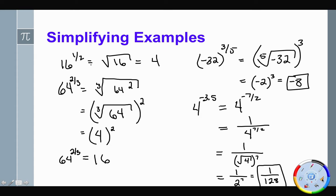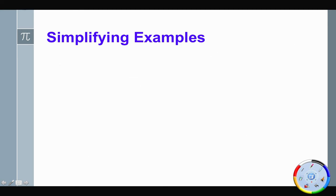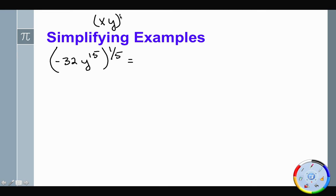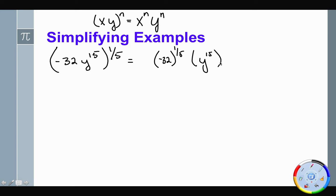Let's take a look at simplifying with variables. Say we had negative 32 times y to the 15th, all to the power of one-fifth. One of our exponent properties says that if I have a product of two things raised to some exponent, each factor gets that exponent — similar to the distributive property. So we distribute the one-fifth power to both pieces: negative 32 to the one-fifth, times y to the 15th to the one-fifth.